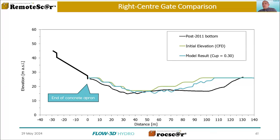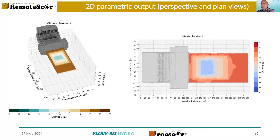One of the things we wanted to look at further was: can we account for that and see what it looks like? But generally, one takeaway from this is the depth of scour in the vertical direction — we're still getting that okay. It's just the longitudinal extent that isn't quite matching. I'll hand it back to you, Eric, to talk about these outputs.